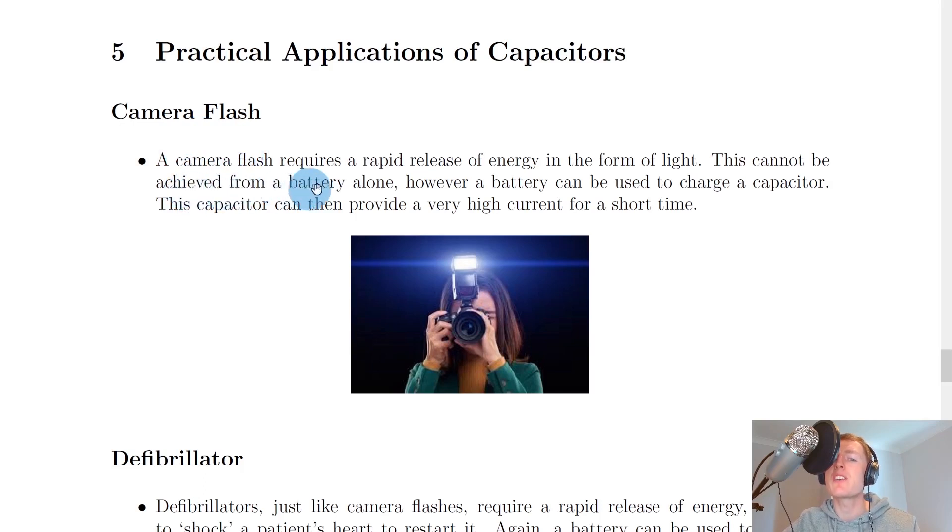A camera flash requires a rapid release of energy in the form of light. This cannot be achieved from a battery alone. However, a battery can be used to charge a capacitor. This capacitor can then provide a very high current for a short time, which causes a brief flash. So a camera flash is a good application of capacitors.